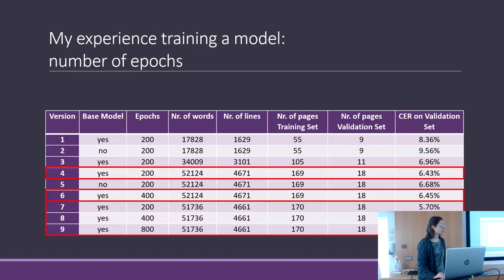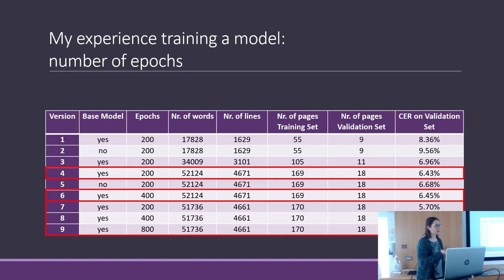Question: Does 200 times mean it needs 200 separate pages? No. It went through all the pages in the first epoch — all the pages evaluated and compared with the validation set — and that is one epoch. Then it does it again, and again. So you don't need 200 pages.